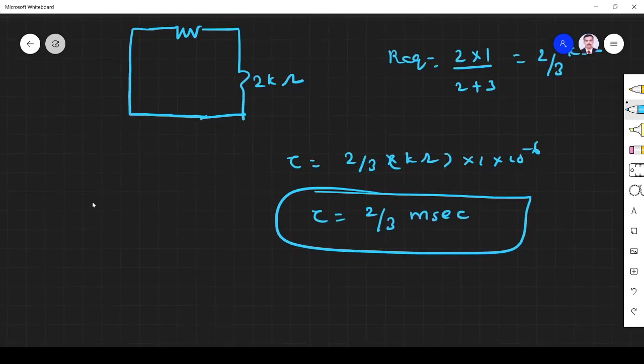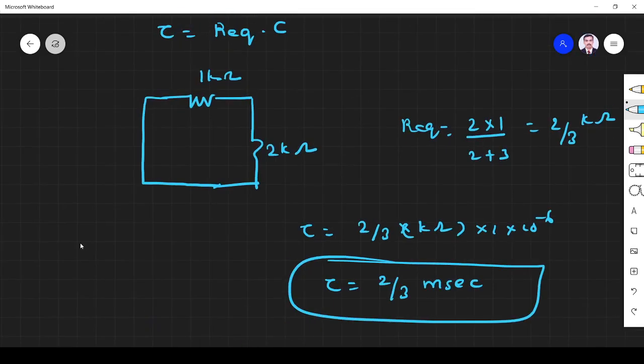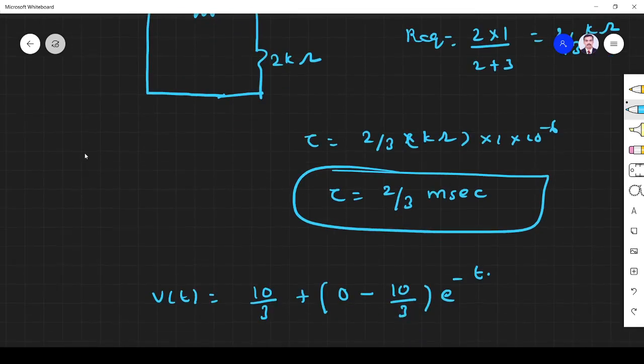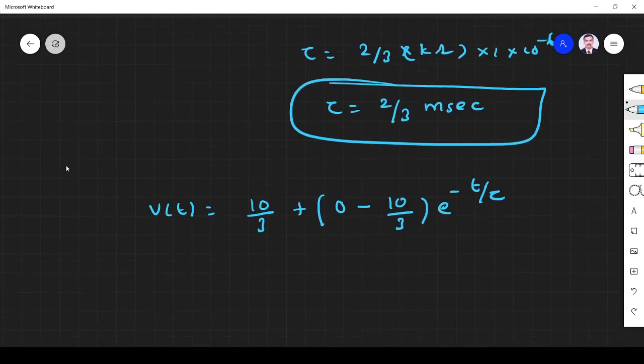So we got everything. For V(∞) sorry, V(t) is equal to V(∞). V(∞) is 10 by 3. Plus V(0) [0 minus 10 by 3] e^(-t/τ). So t by τ. τ is equal to 2 by 3. So I will take t by τ as it is. Then we will substitute.